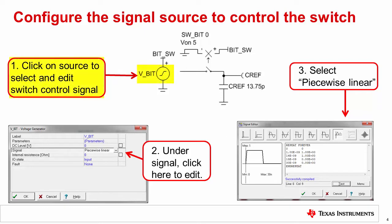First, double click on the signal source to configure the signal. Second, under signal, press the button with the three dots. This will open the signal editor. Third, select the piecewise linear function type. This waveform type will allow us to generate a square wave that will control the switch operation.